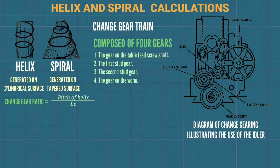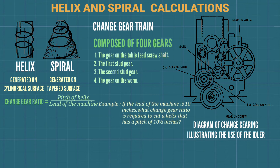Example: if the lead of the machine is 10 inches, what change gear ratio is required to cut a helix that has a pitch of 10.5 inches? Substituting into the formula, the change gear ratio equals 10.5 divided by 10.